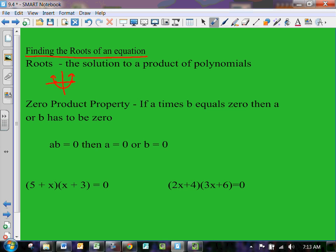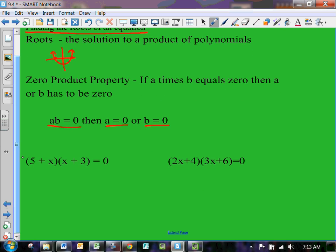So the zero product property says that if A times B equals zero, then A or B has to be zero. That means if you have an equation that's equal to zero, then something times zero always has to equal zero. One of those has to be zero. You can see that AB equals zero, then either A has to equal zero or B has to equal zero.